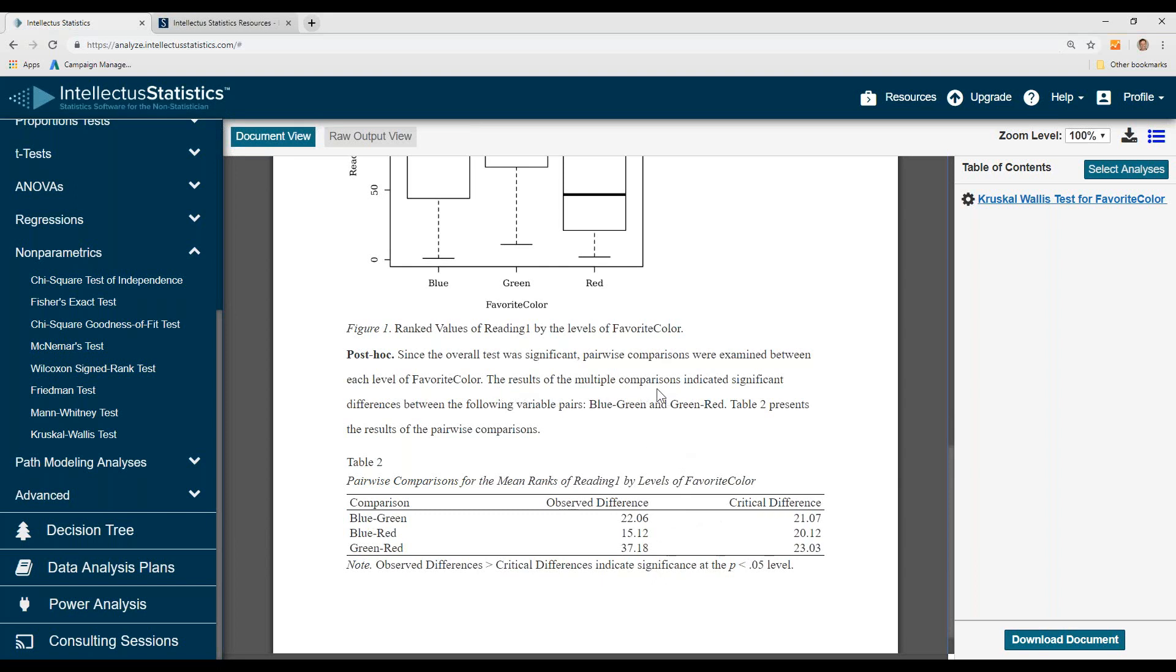And the write-up says that. The multiple comparisons indicate a significant difference in the blue-green and the green-red. And there's your APA table.